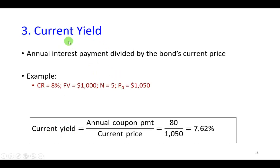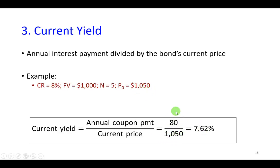Thirdly, is the current yield. When you hear the term current yield, it simply is the annual coupon payment on a bond divided by the price of the bond. It's not a very useful measure of rate of return on a bond. Nevertheless, it can be calculated — and in this example it comes out to be 7.62%, because you're getting $80 every year and the current price of the bond is $1,050. This is reckoned on an annualized basis.